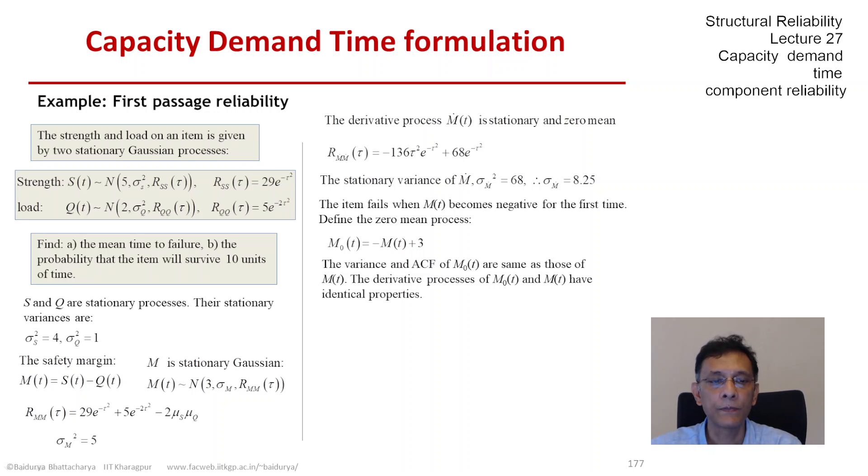With that in mind, failure occurs when M₀(t) becomes greater than 3 for the first time. So that first passage is the passing of the barrier of 3 by M₀ from below.